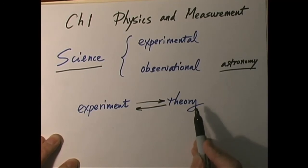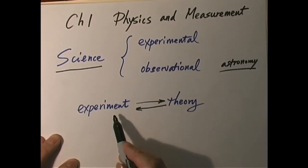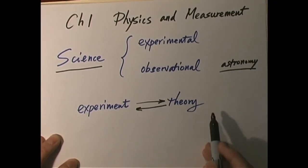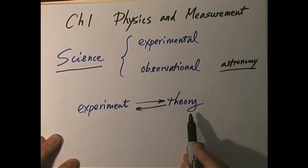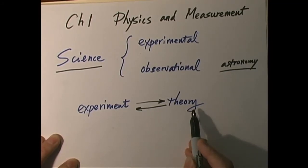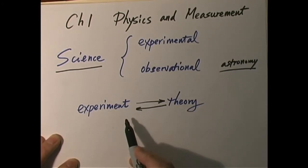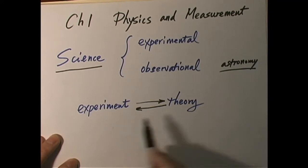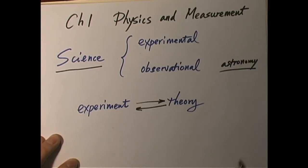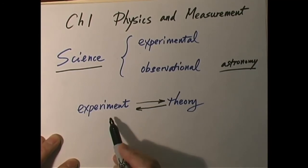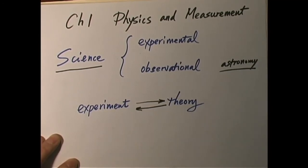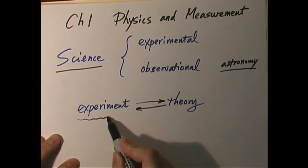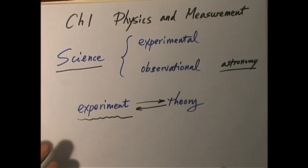A correct theory should account for all the experimental results. Experiments can be used either to validate a theory or to discredit it. But if there is a conflict between a theory and a carefully designed, well-executed, reliable experiment, the rule is we always get rid of the theory — because we can always rewrite the theory, but you cannot rewrite the experiment, because that's the laws of nature. Experiment plays a central role in obtaining knowledge about the physical world.